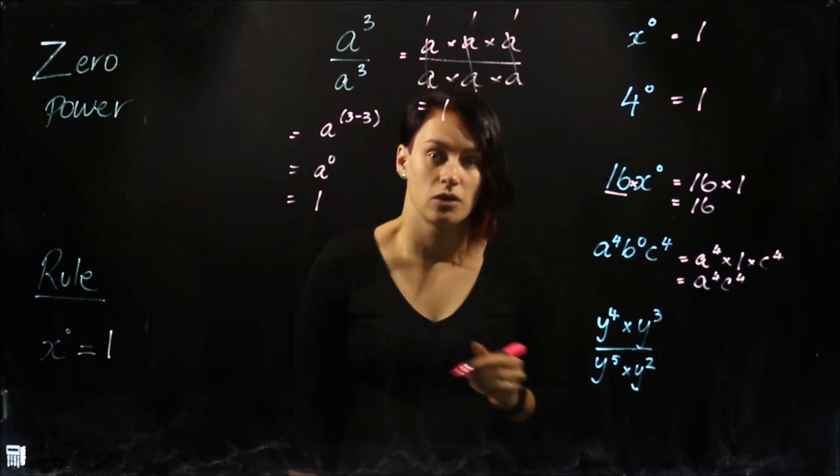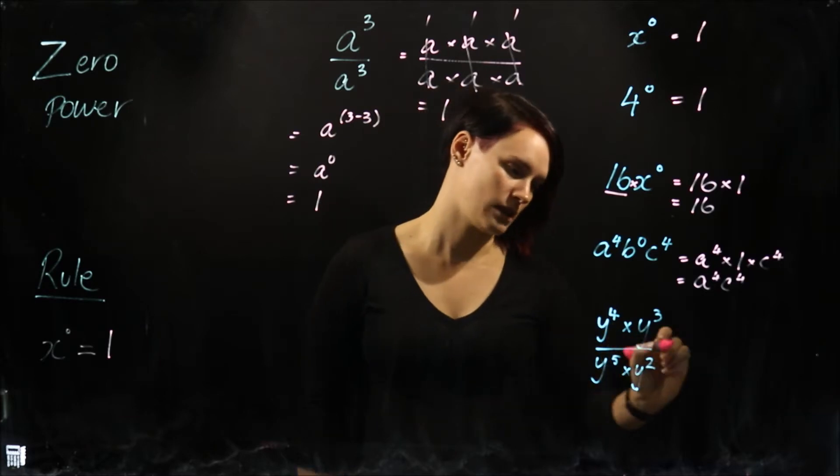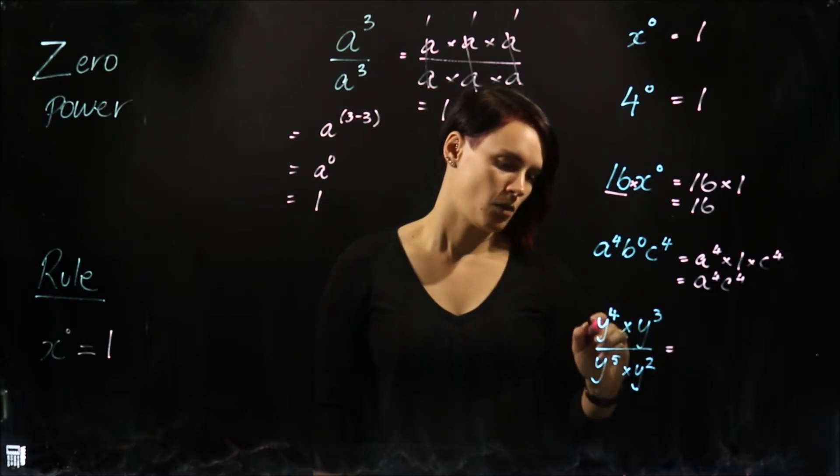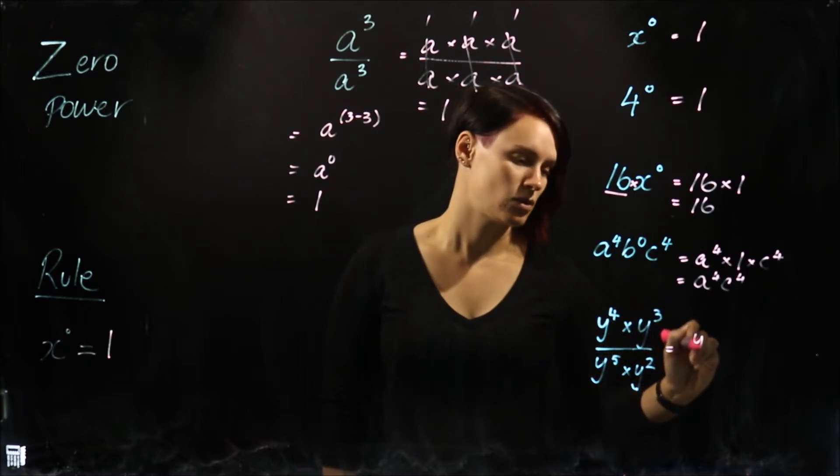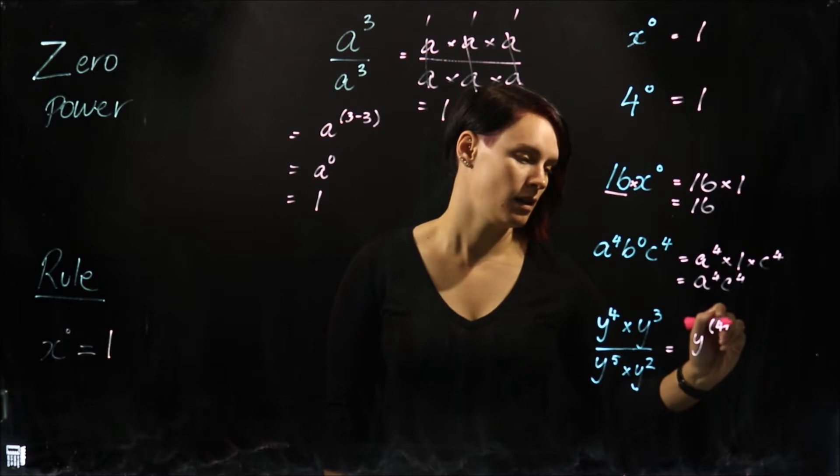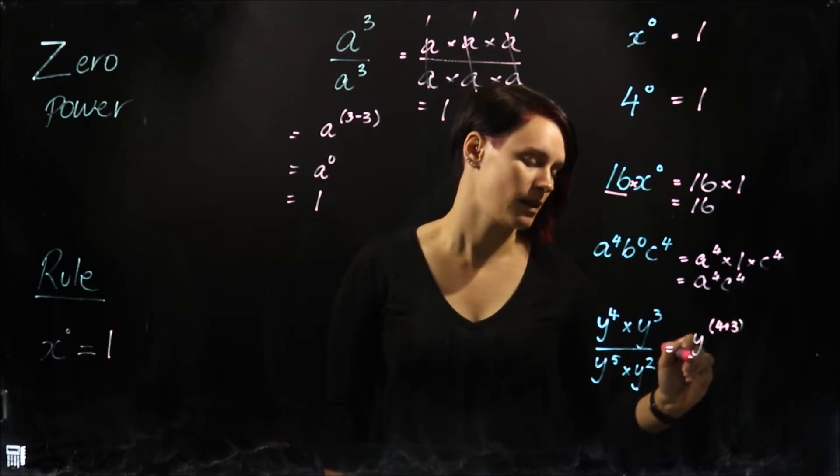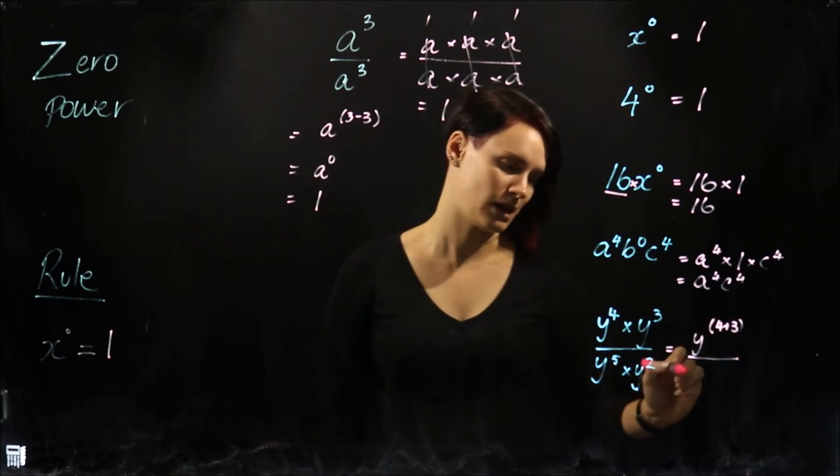Now this one here is going to combine a lot of rules that we've learned. So let's take it step by step. Y to the power of four times Y to the power of three. We are multiplying together something with the same base. So we are going to add those indices up there. And then on the bottom of the denominator there, we've got the same thing.